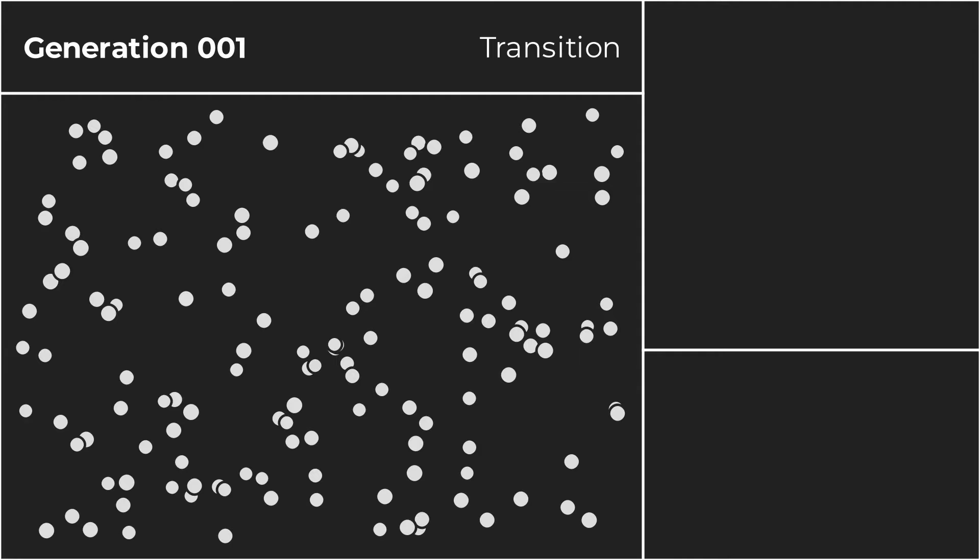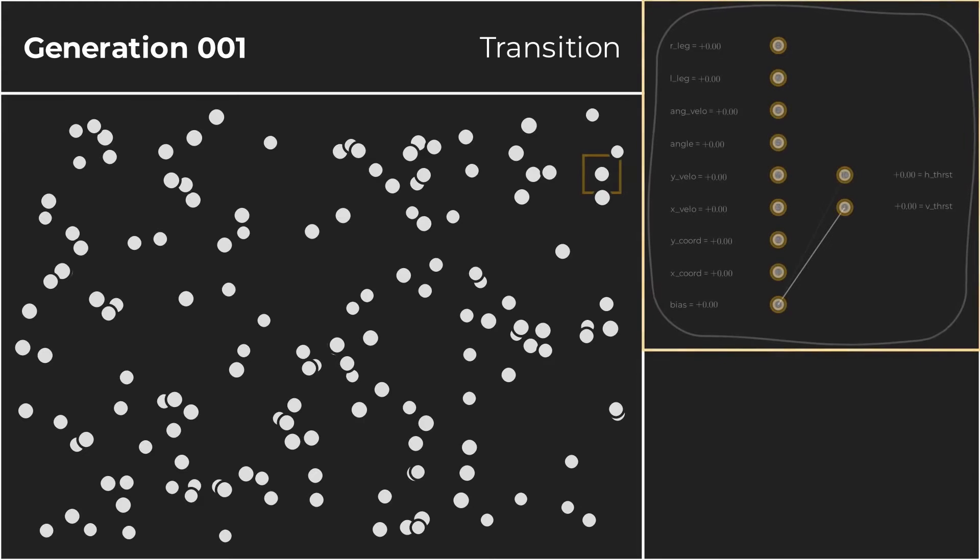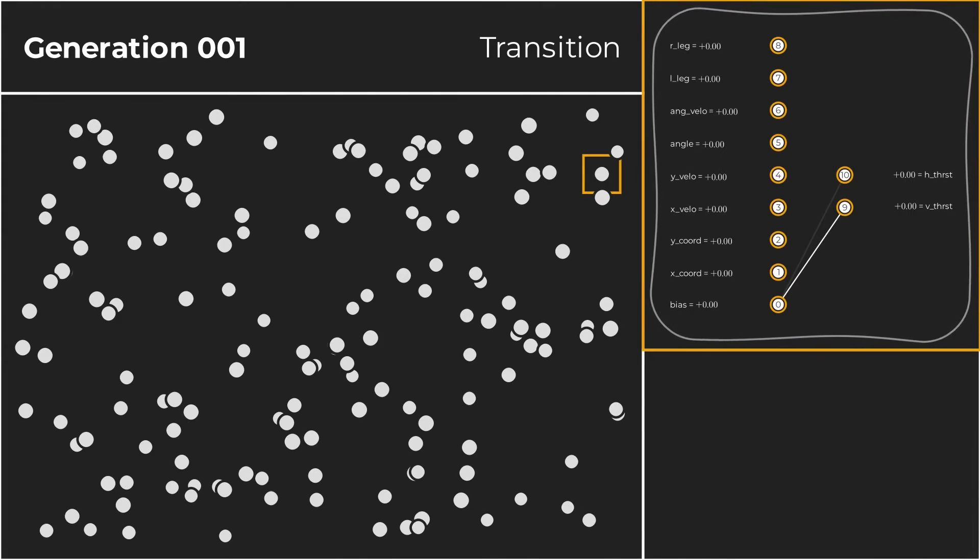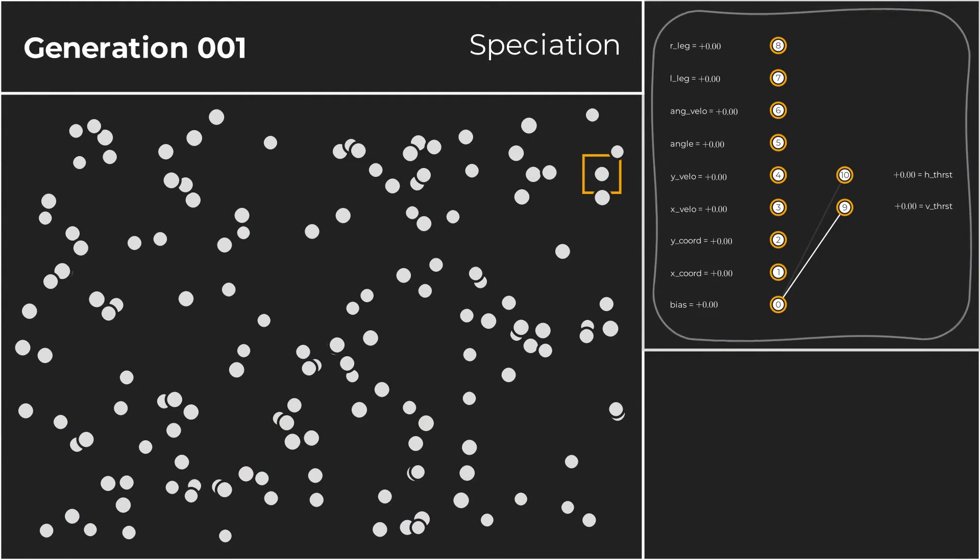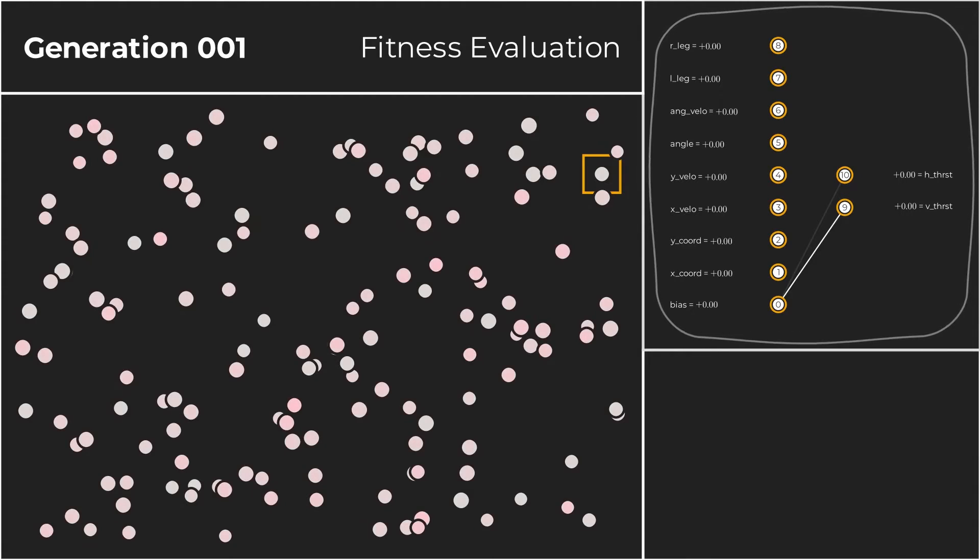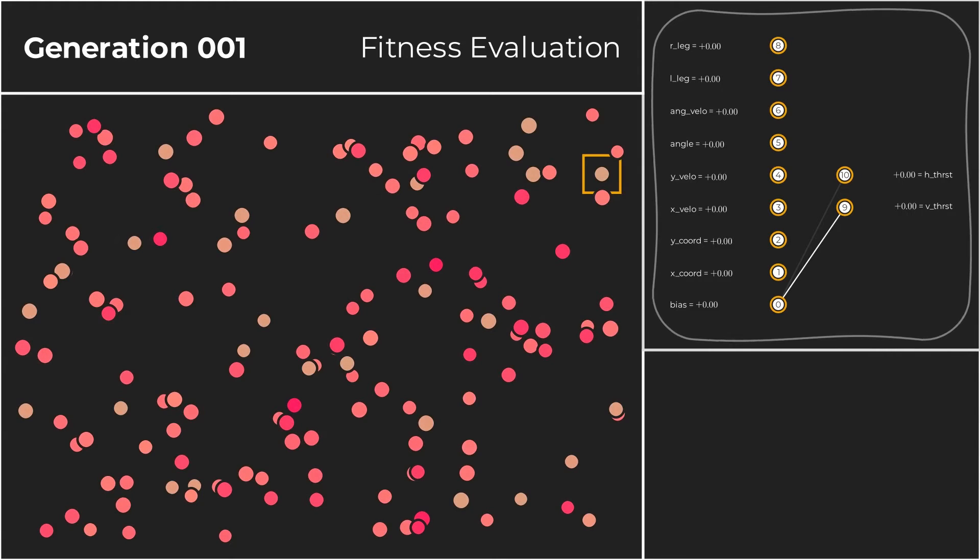We are now inside the second generation, meaning one iteration of the NEAT algorithm has passed, and the networks should be a tiny bit better at steering the aircraft. Let's test this hypothesis by looking at a random individual of the current population throughout this generation. Save for some minor changes to the weights of its connection genes, the individual's genome has remained unchanged from mutation. Yet again, there is not enough genetic diversity to warrant the creation of a new species. The fitness levels remain very low. There is even a slight decrease in the average fitness.